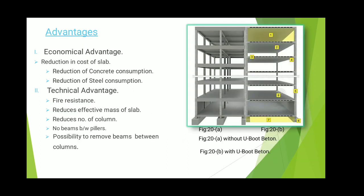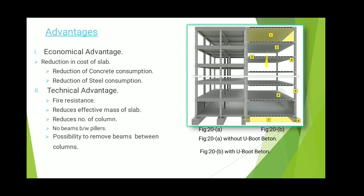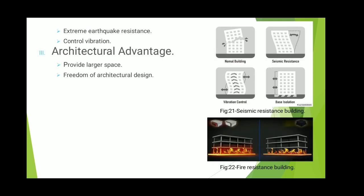There are certain advantages of U-Boot technology. First is economical advantage: it reduces the cost of slab, reduces concrete consumption, and reduces steel consumption. Second is technical advantage: it is fire resistant, reduces effective mass of slab, reduces the number of columns and beams between pillars, with the possibility to remove beams between columns. The next advantage is extreme earthquake resistance — it is highly resistant to earthquakes and controls vibrations. The third is architectural advantage, providing larger space freedom for architectural design.